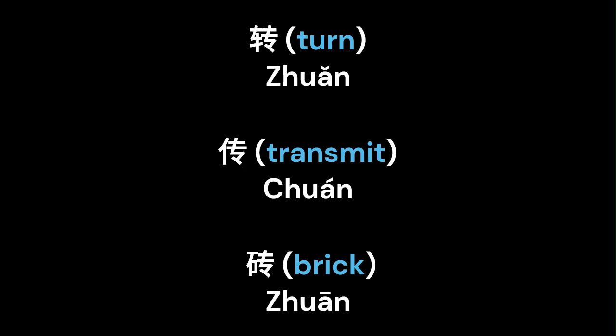In radical form, 专 can be found in words such as turn, 转, transmit, 转, and break, 转. This makes it an important character to learn.